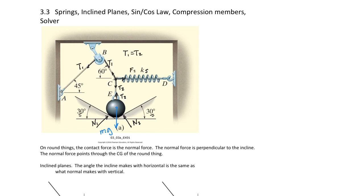The normal force is perpendicular to the inclined plane. With round things, like this ball, the normal force goes through the center of gravity of the ball. On round things, the contact force is the normal force; the normal force is perpendicular to the incline and points through the CG of the round object.